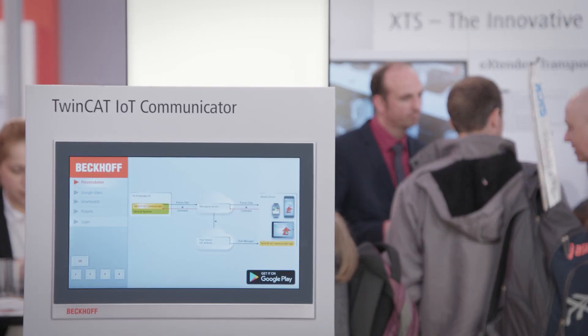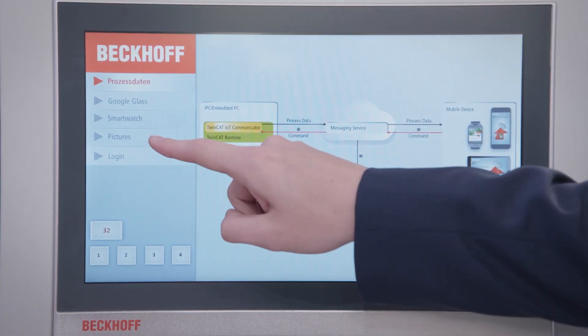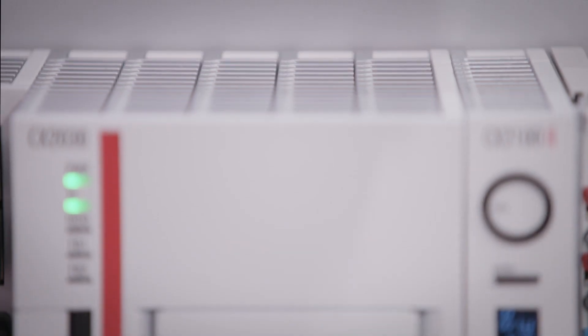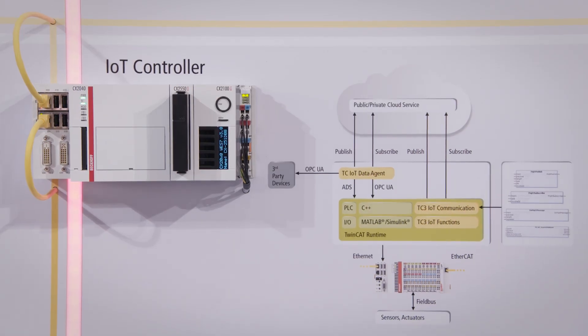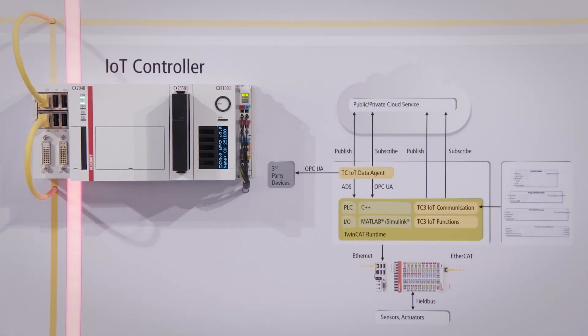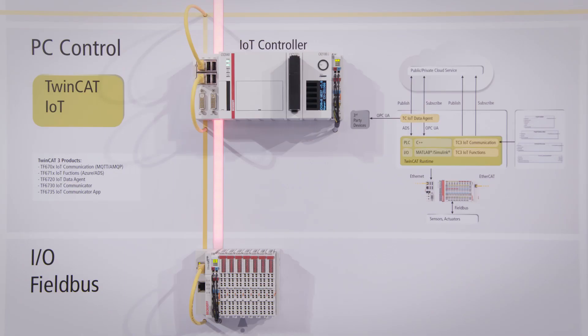TwinCAT IoT supports all common protocols for cloud communication and provides an easy-to-configure connection. TwinCAT IoT provides multiple mechanisms to communicate with public or private cloud systems. Not only public cloud service provider like Microsoft Azure or Amazon AWS can be connected to but also MQTT or AMQP message brokers in a private network, for example the machine network. OPC UA is also a very big part of TwinCAT IoT and can also be used to provide cloud communication functionalities.